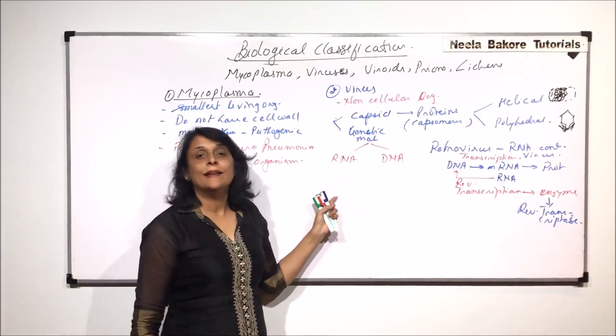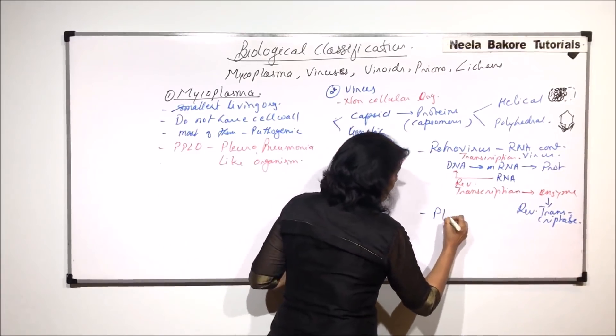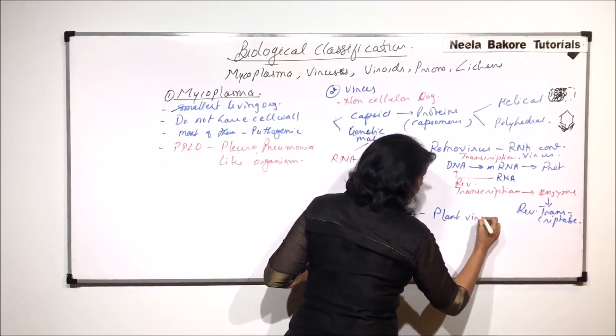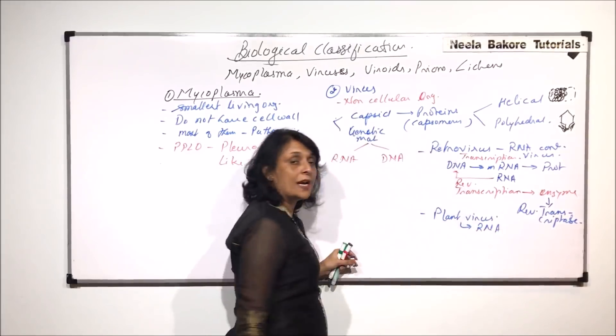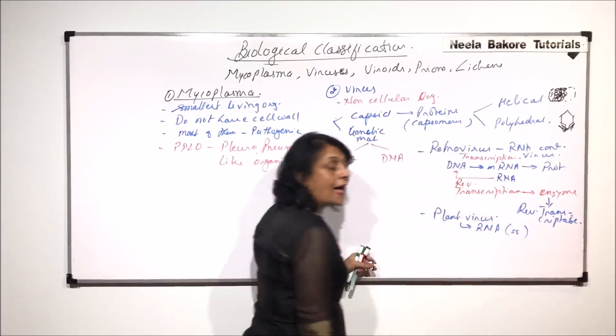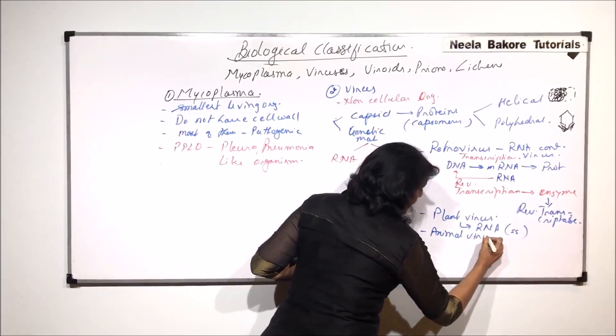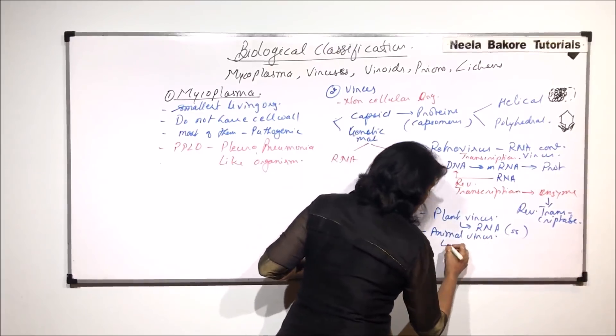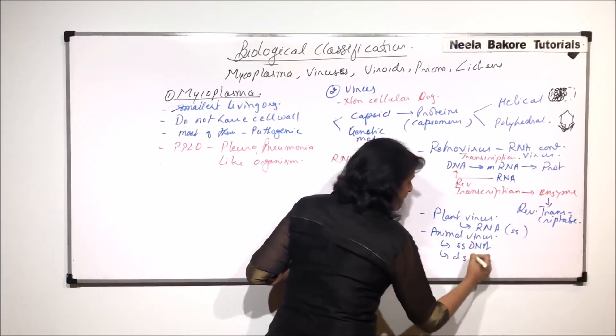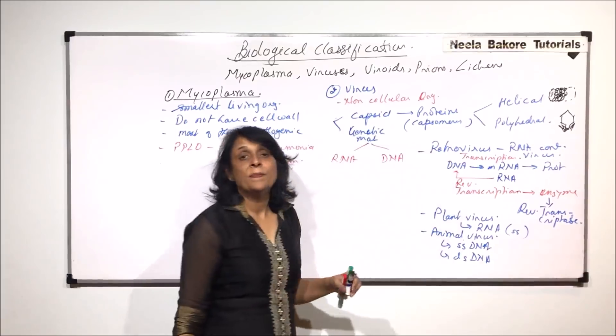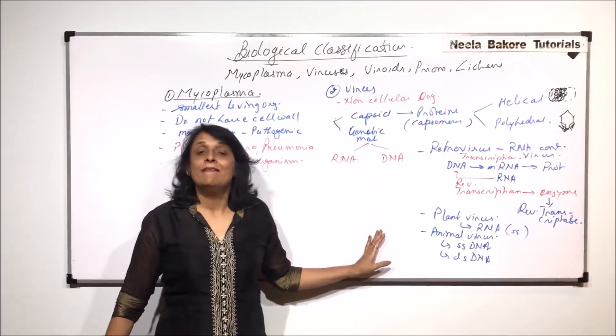Most plant viruses normally have RNA as genetic material and this RNA is single-stranded RNA. Animal viruses could have single-stranded DNA or double-stranded DNA, so both are possible.